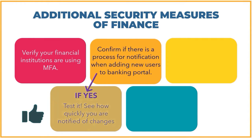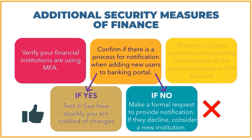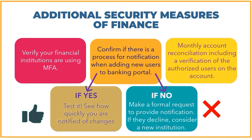If there isn't a notification process in place, you can make a formal request that they provide you with notification — and if they decline, then maybe it's time to consider a new institution for your banking. And lastly, a monthly account reconciliation, including a verification of authorized users on the account, is always a good idea, especially if there's a lot of turnover within your organization. If you are a new staff member in a leadership role, make sure old staff no longer have access to that information.